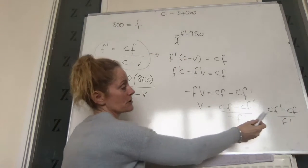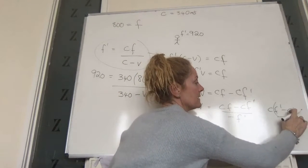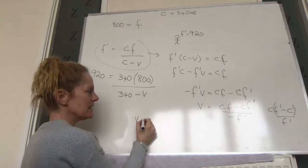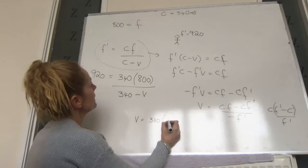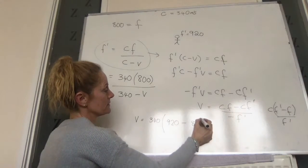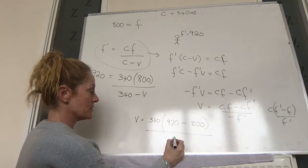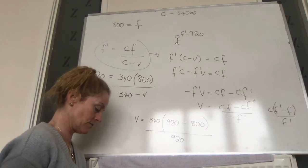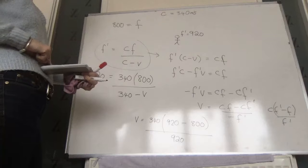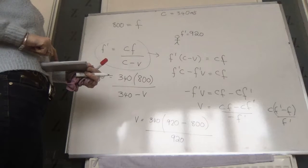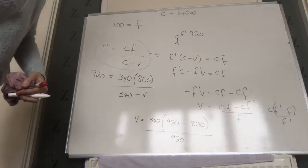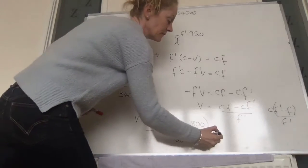Either way you should get the correct answer. Putting it into the formula: V equals 340 times (920 minus 800) all over 920. Quickly multiplying out: 340 times 120 divided by 920. The answer is approximately 44.35 metres per second, or about 45 metres per second.